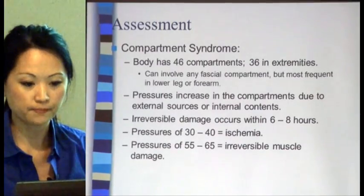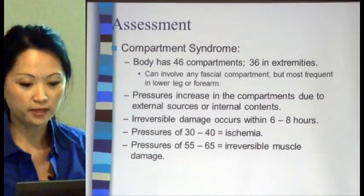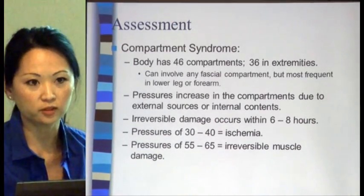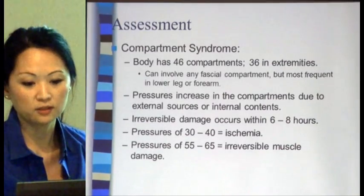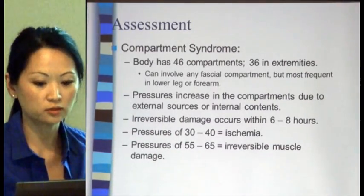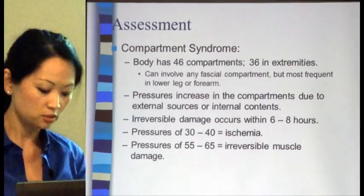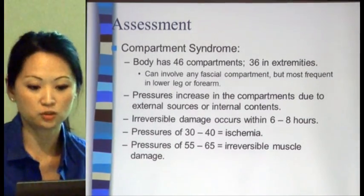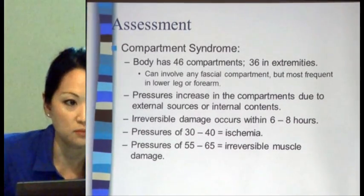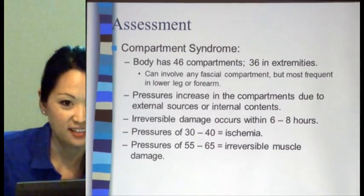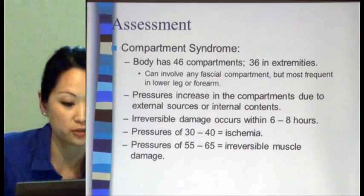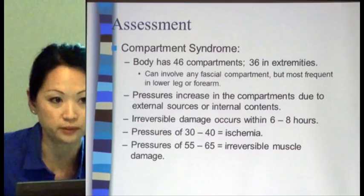The body has 46 compartments, 36 of which are in the extremities. Compartment syndrome can occur so easily because the fascia doesn't stretch at all. Any external or internal source of pressure can cause it — external sources include a cast, crush injury, or burns; an internal source would be any type of swelling or bleeding into that compartment.